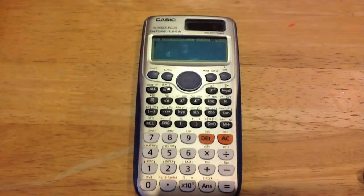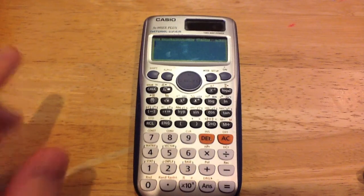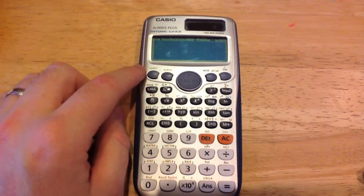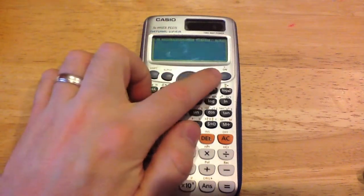So first of all we're going to get our Casio calculator, I'm using the FX991ES but it can be any modern Casio. First of all we're going to need to go into setup, so we're going to press shift and setup.